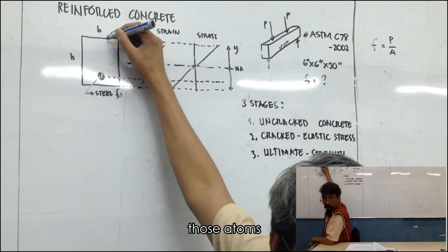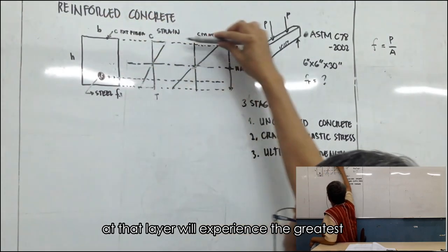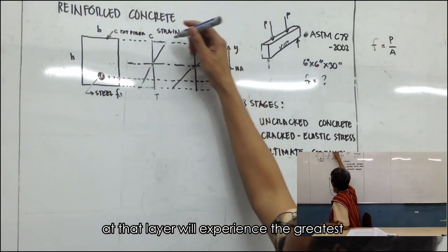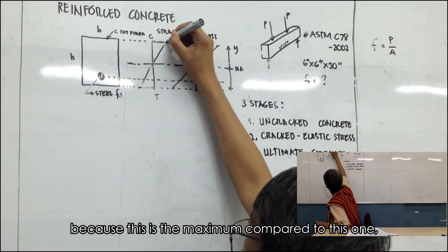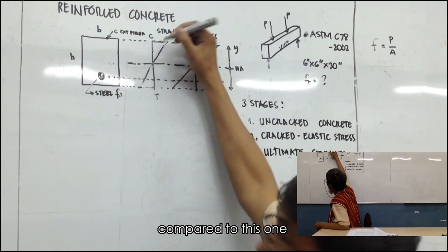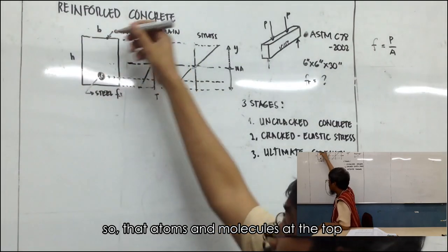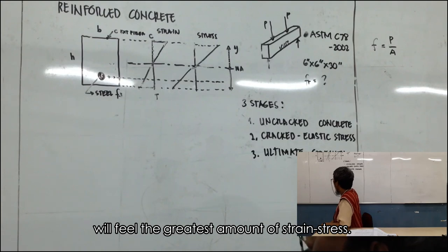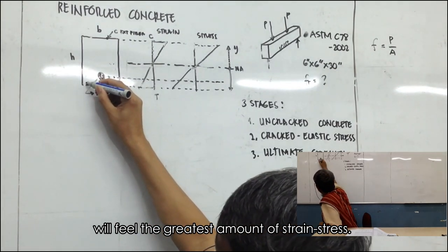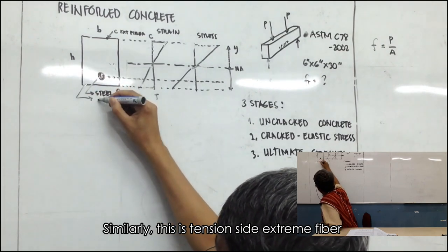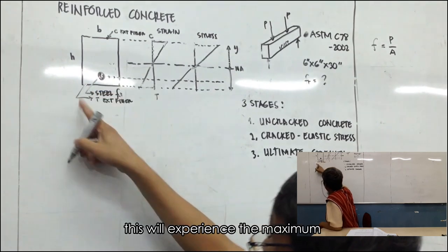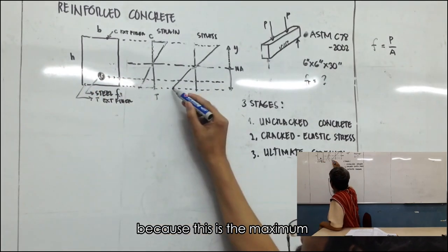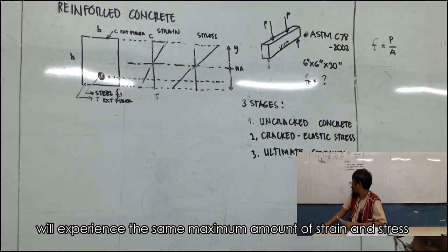Those atoms, those molecules of that layer will experience the greatest stress. Why do we say the greatest? Because this is the maximum compared to the other layers — that is the maximum. So the atoms and molecules at the top will feel the greatest amount of strain and stress. Similarly, the tension-side extreme fiber will also experience the maximum — the same maximum amount of strain and stress.